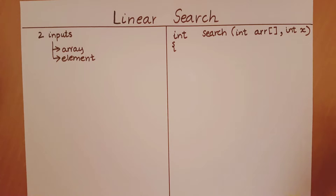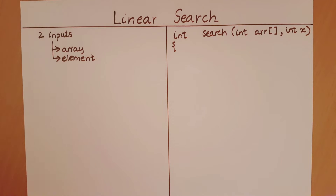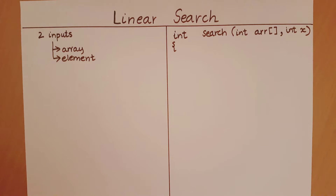The function is going to traverse the array using a counter variable i, and at each index of the array it is going to check if the element in the array is equal to the element we are searching for.